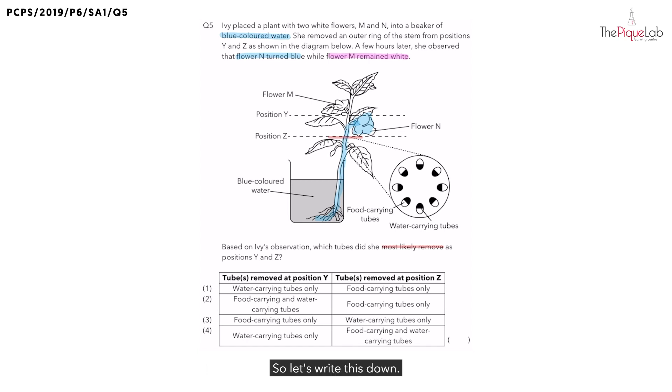So, let's write this down. At position Z, the water carrying tubes were intact. But, do we know if the food carrying tube was removed? We can't say for sure, so we do not write it down.